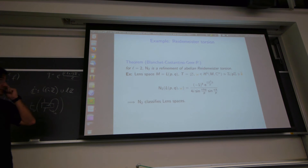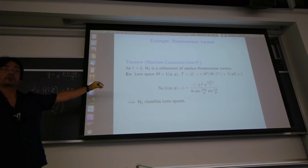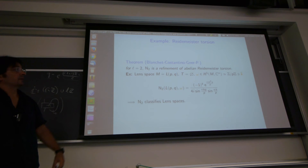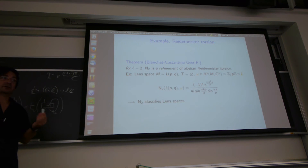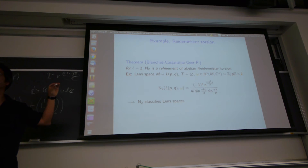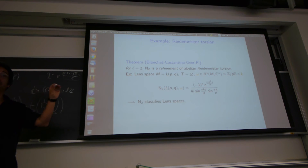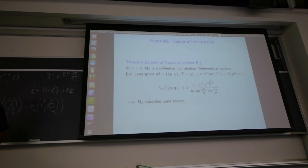For example at level 0, the invariant is the Abelian Reidemeister torsion. To show non-triviality, for L=2 we computed the invariant for all lens spaces. Remarkably, the invariant distinguishes all lens spaces — which shows the invariant is non-trivial — whereas for the same level, the Witten-Reshetikhin-Turaev invariant is completely trivial and distinguishes nothing.